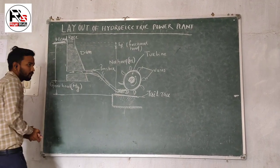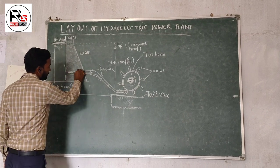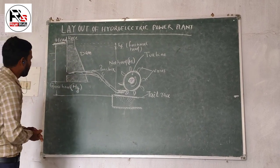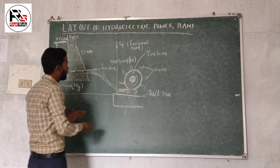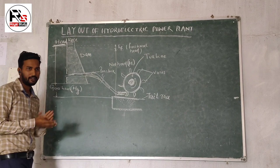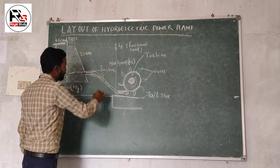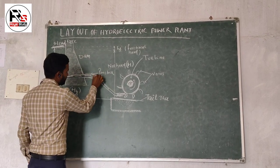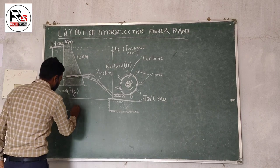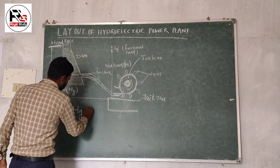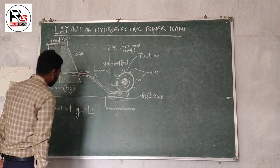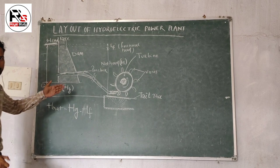What is gross head? When there is no flow inside the pipe, then the difference between the headrace and the tailrace — that is the gross head. And what is net head? When there is some water flowing inside the pipe, then there is some loss of head due to friction between the flowing water and the pipe wall, and also some head loss at bends. So net head is gross head minus losses. This is all about the hydraulics of a hydropower station.